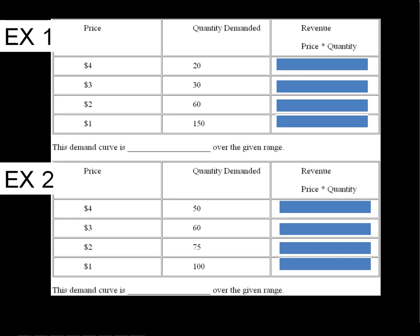Here's what it looks like with a couple examples here. So this is price times quantity. So we can just kind of work these out here. So that's four times 20, that's 80. Three times 30, that's 90. Two times 60, 120, and 150. So I wonder if this is going to animate here. Oh, look at that.